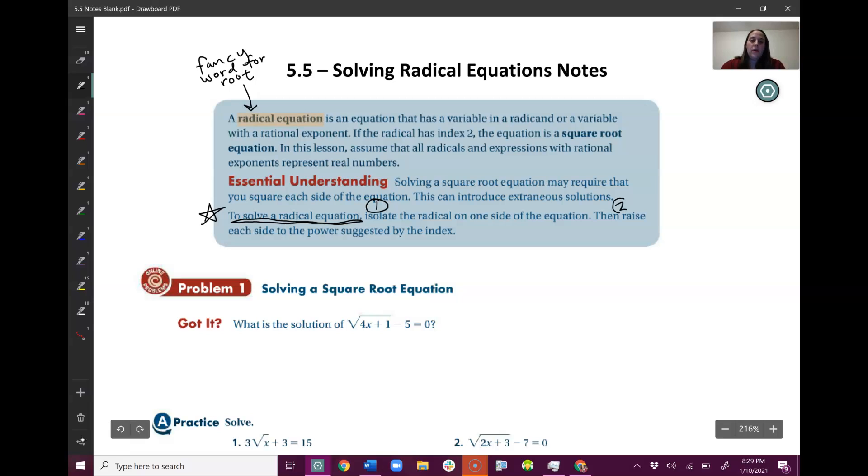Step two, raise each side to the power suggested by the index. So that just means if it's a square root, square both sides. If it's a cube root, cube both sides. And then you just solve it like a normal equation from there.